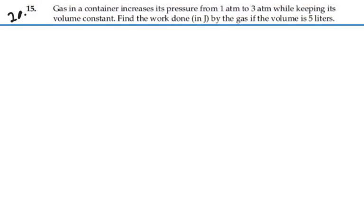Here's problem 2015. Gas in a container increases its pressure from one atmosphere to three atmospheres while keeping its volume constant. Find the work done in joules by the gas if the volume is 5 liters.